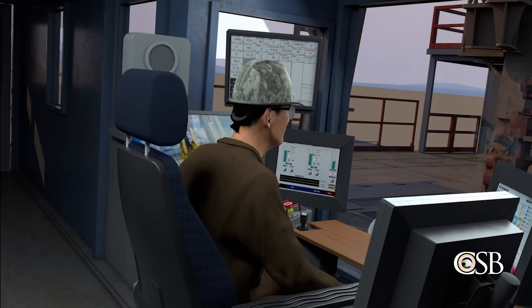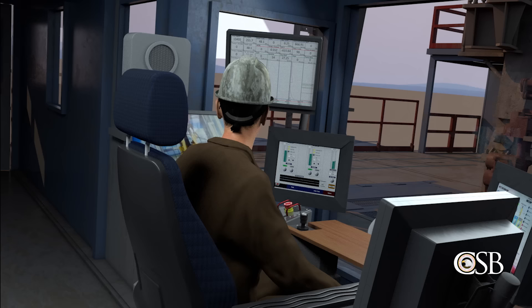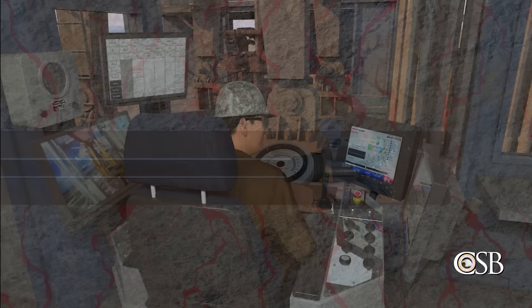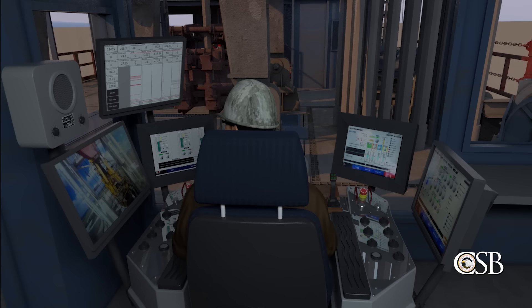For an alarm system to be effective, it must be configured so that the driller only receives alerts to conditions that require attention. But the CSB found that Patterson did not develop guidance to help drillers set the alarm system for the various operations performed on the rig, such as drilling, tripping, and circulating. Instead, to manage the alarm rate, both drillers apparently elected to simply turn off the alarm system.